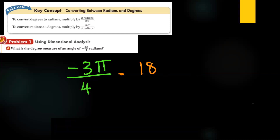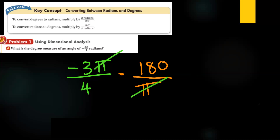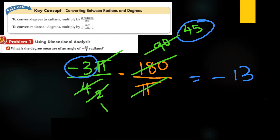Let's find the degree measure of an angle of negative 3π over 4. My angle in radian is −3π/4 and I want to find its degree measure. Multiply it by 180 over π in order to cancel π. Simplify: 180 over 2 is 90, then 90 over 2 is 45. So we have negative 3 times 45, which gives 135 degrees. So negative 3π over 4 in radians equals negative 135 degrees.